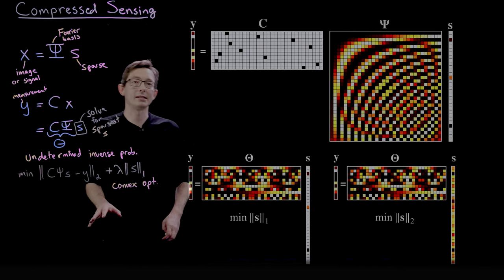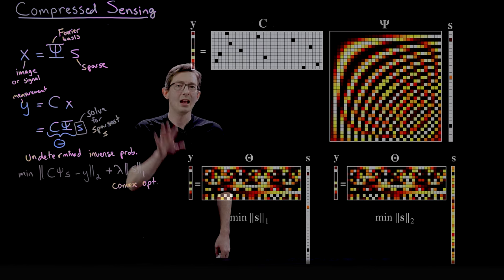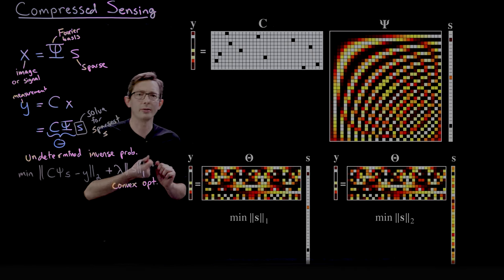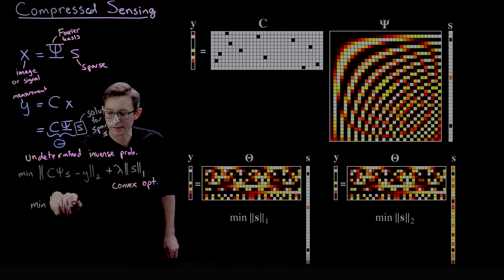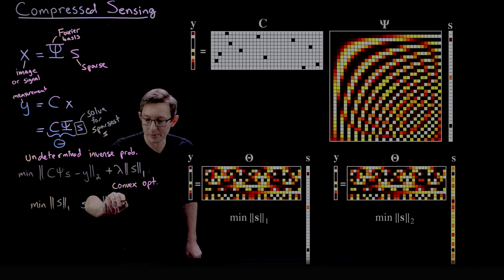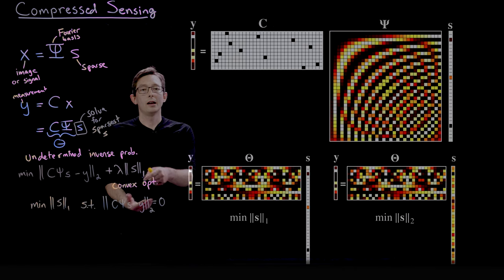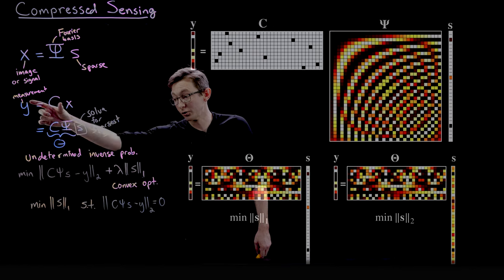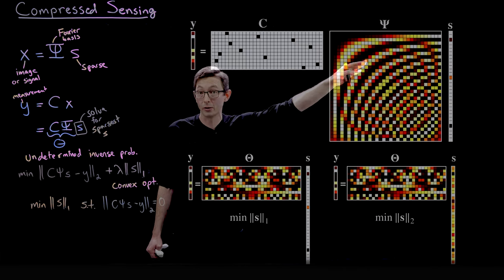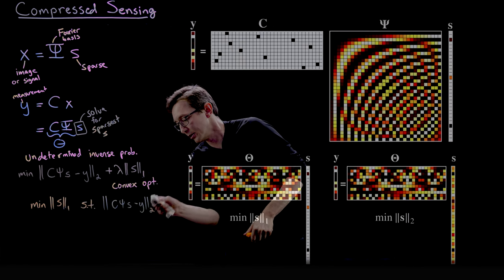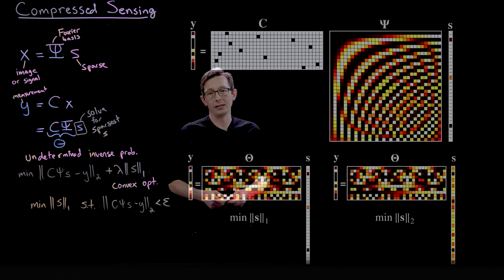So that's really the big idea here in compressed sensing is that we're going to find the sparse solution to this underdetermined problem using L1 regularized optimization. There's other ways you can write this. I'll just write down one more for you before I go. You could also write this as minimize the one norm of S such that C psi S minus Y equals zero. The two norm of that equals zero. You could also minimize this S1 subject to some constraint on this being true. And in many cases if you have some measurement noise, so Y is not exactly C times psi times S but there's some measurement noise, this might not be exactly equal to zero.